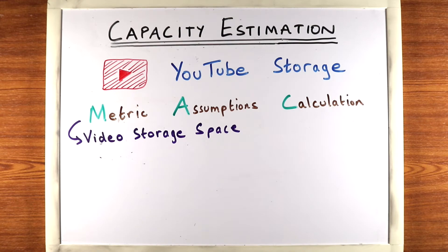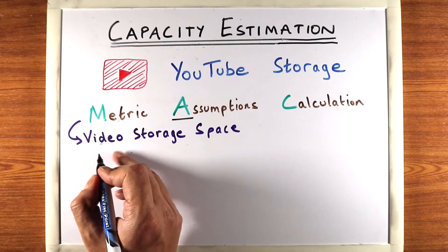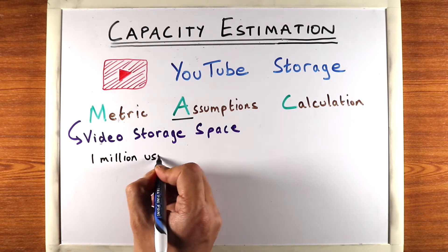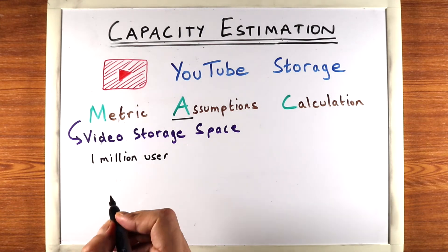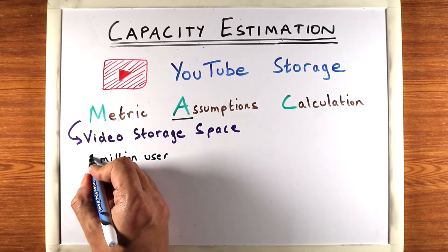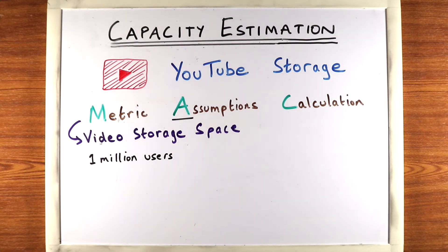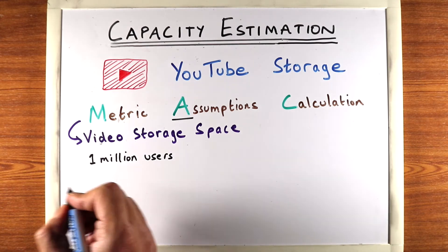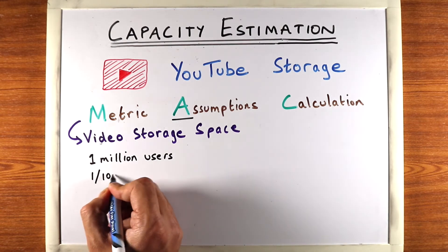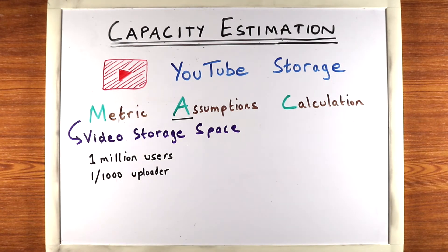A good starting point in these problems is to start with the number of users. So the first useful assumption is the number of users — let's assume we have 1 million users. This is a very conservative assumption; your interviewer can ask you to define more users, but right now we're assuming 1 million and you can scale it up pretty easily. We're trying to estimate how many videos will be in our system, and a good way to do that is to define how many of these users will be video uploaders. Let's say one out of every thousand users are uploaders — a reasonable assumption. You can clarify to the interviewer that you're just assuming this number; the real number might be something else.